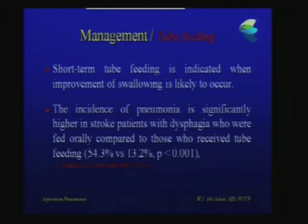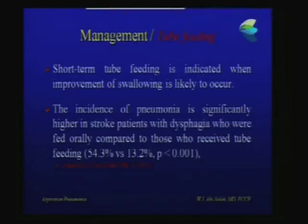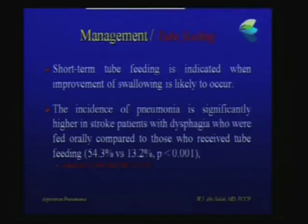Most of us will end up giving some form of enteral tube feeding to end-stage patients because it is so difficult to tell the family you are not going to leave their loved one without food or water — it feels almost criminal. But just think about the evidence. As the patient or family becomes ready to discuss such issues, they should really know that they are not doing the wrong thing by withholding tube feeding.